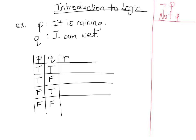If it is raining — P is true — then 'it is not raining' will be false. So when P is true, not P is false. And when P is false, not P will be true. It's simply the opposite of P.